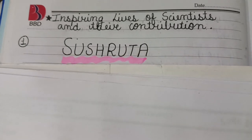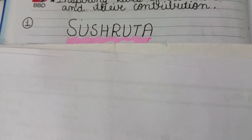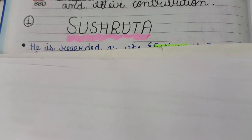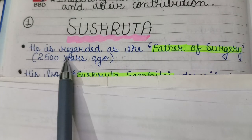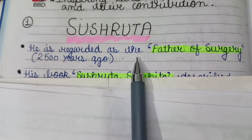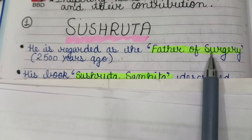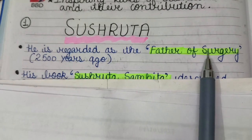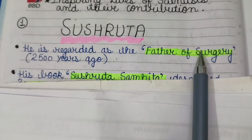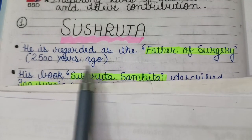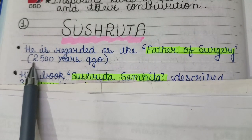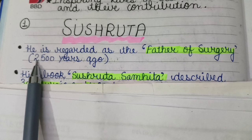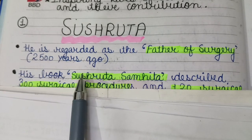First, we start from Sushruta. Sushruta is regarded as the father of surgery. He lived approximately 2500 years ago.